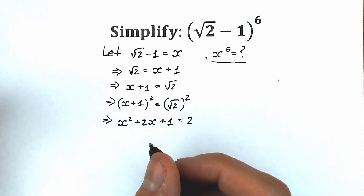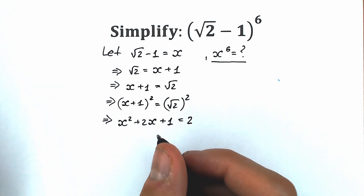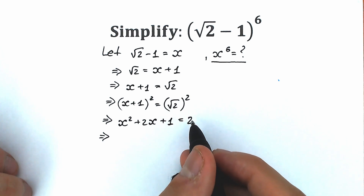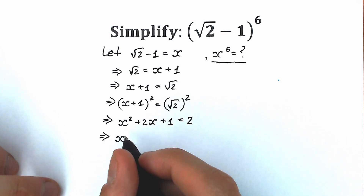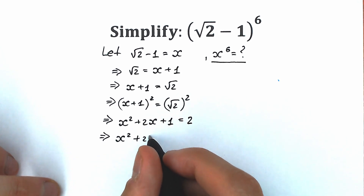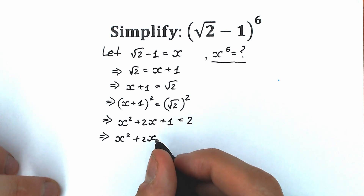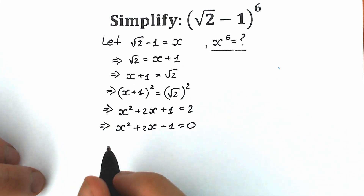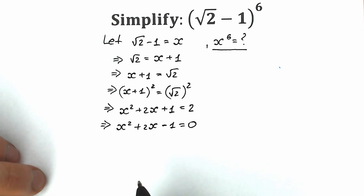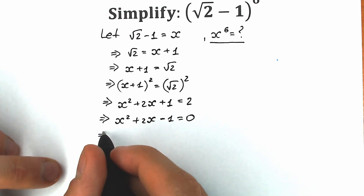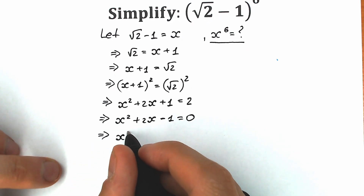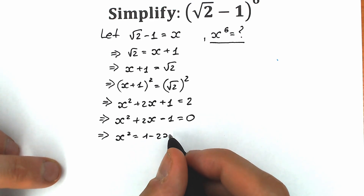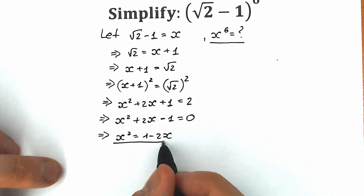We do need to solve this quadratic equation. I want to show you a really great trick. First of all, let's bring our constant from the right side to the left side. As a result, we have x squared plus 2x minus 1 equal to 0. And the final tricky move: let's express our x squared. So as a result, we have x squared equal to 1 minus 2x. This is an extremely important expression for us.